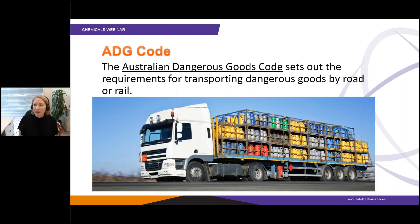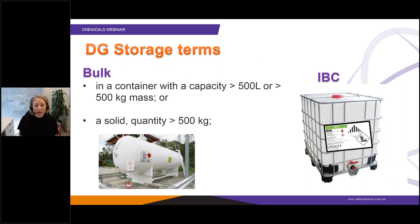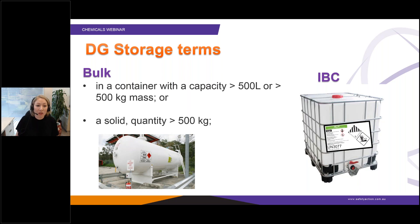The ADG code — or ADGC — tells you about the requirements for transporting dangerous goods by road or rail. Regarding dangerous goods quantities, a bulk dangerous good is one stored in a large container — for example, an LPG tank. A bulk container is one with a capacity greater than 500 litres or kilograms, or for solid substances, a quantity greater than or equal to 500 kilograms.